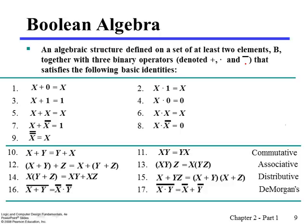It satisfies the following basic identities. In other words, Boolean algebra is an algebraic structure that satisfies all these equations. You have three operators, AND, OR, and NOT, and the two elements, 1 and 0.